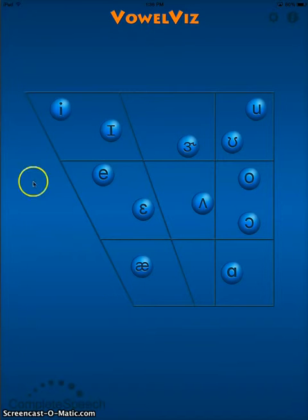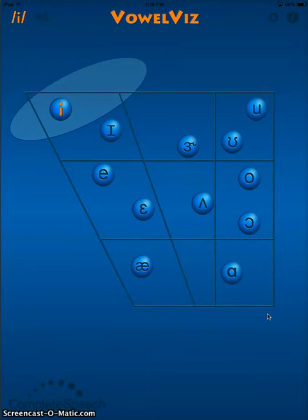VowelViz uses the traditional vowel quadrilateral to show where different vowels are pronounced in the mouth, where the tongue is placed, and where they resonate. When we take a look at E, for instance, we see that it is a high front vowel, and that light blue oval that surrounds the button represents the range of articulation for Standard American English.